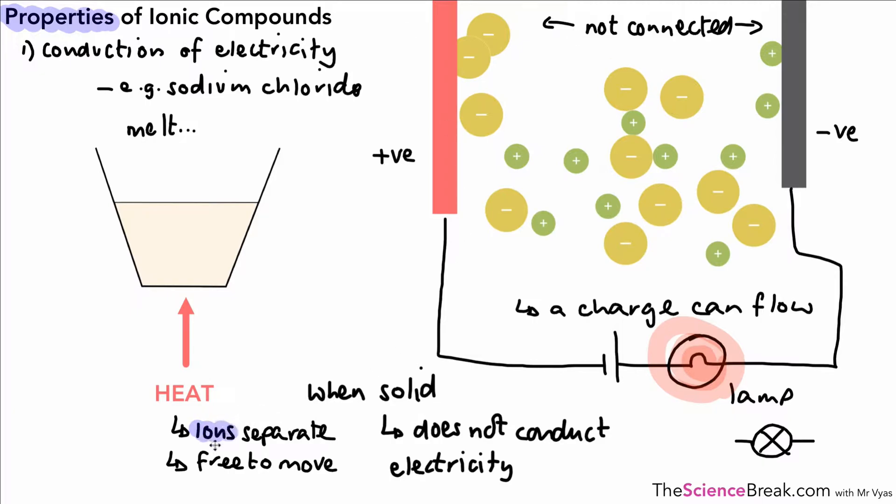We can also explain that the ions are free to move and therefore they are able to carry a charge, and a charge can flow between those conductors because of the movement of ions and we can get a flow of electricity. We can also explain that when the material is solid, when the ionic compound is solid, the ions are not free to move and therefore it does not conduct electricity.